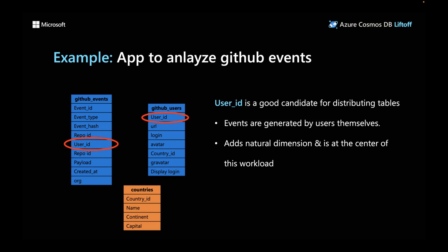Here's another example: an application that analyzes events on GitHub, generated by users. The data model has an events table, a users table, and a small dimension table for countries. Events and users are the application-specific tables where most data is stored. In such an application, user ID is a good candidate for distributing tables because it is the central piece — events are generated by users themselves — and it adds a natural dimension to the data.